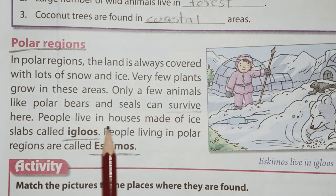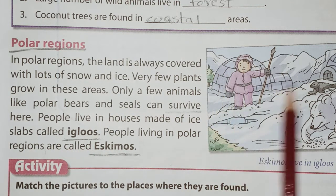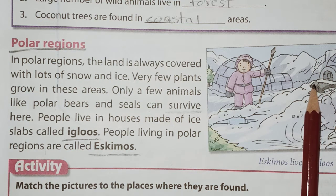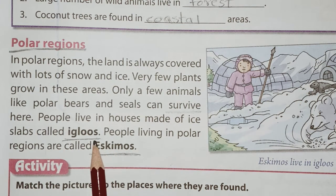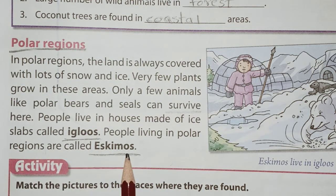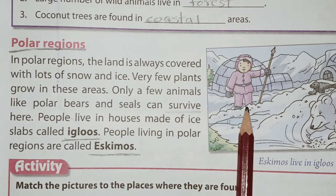People in polar regions live in houses made of ice slabs called igloos. You can see the type of house — it is known as an igloo and it is made up of ice slabs. Imagine a house made of ice! People living in polar regions are called Eskimos.